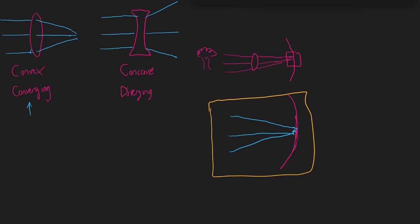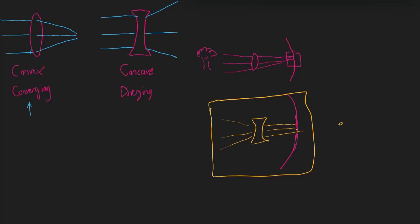If the light is being focused too close — focused in front of the retina when we want it at the retina — we would use a diverging lens to get the light bent such that it focuses precisely there. And if the light is being focused behind the retina, then we would use a converging lens. This is how glasses and contact lenses work.